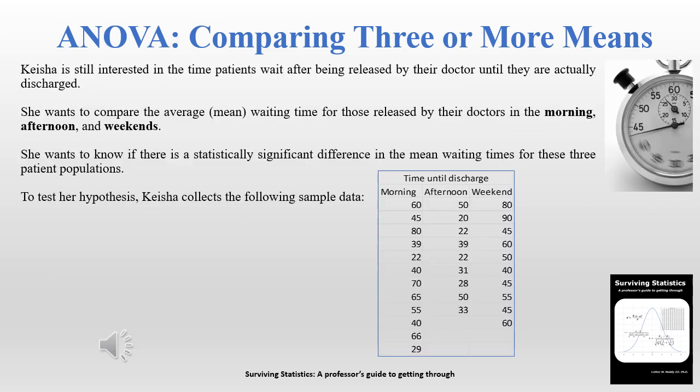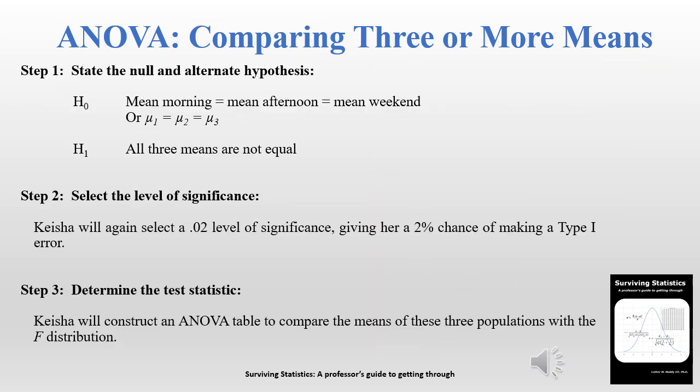Let's set up the new scenario. Keisha previously compared variances of morning versus afternoon patients and could not reject the null hypothesis. This time she's comparing morning discharges, afternoon discharges, and weekend discharges to see if there's a difference in mean waiting times. The keyword here is mean as opposed to variance. She has a sample with the different waiting times for morning, afternoon, and weekend.